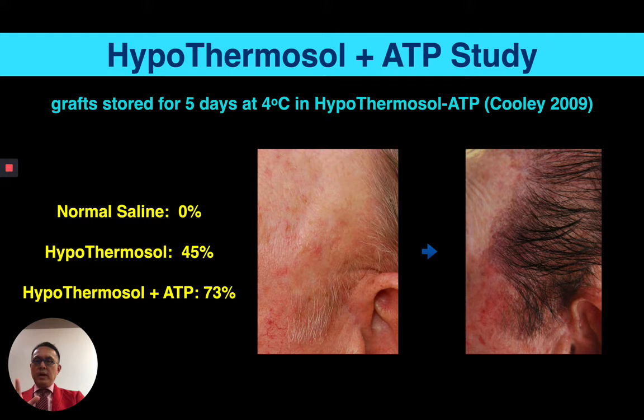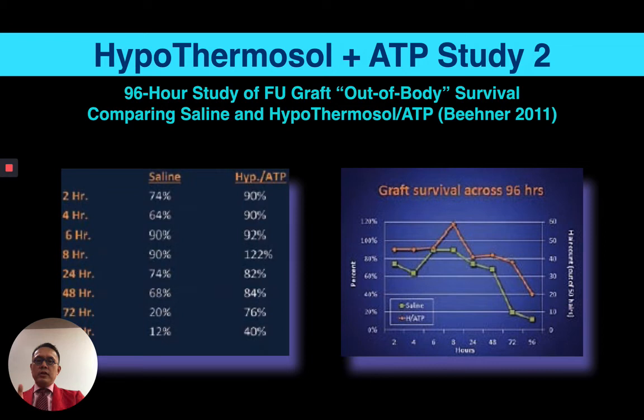A 2009 study by Jerry Cooley showed that at five days in an irradiated area with basal cell cancer of the temple, saline had no survival, whereas hypothermosol alone had 45% survival, and hypothermosol with ATP had 73% survival. A 2011 study by Biener showed no appreciable difference in the first eight hours, though you could argue ATP hypothermosol had a better result, and then it became much more obvious after 24 hours. I've been using hypothermosol ATP since 2014 and have seen a marked shift and improvement in graft survival.